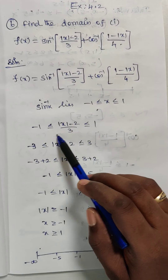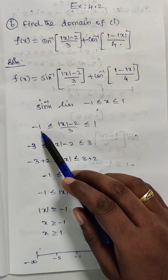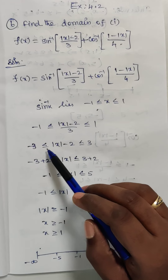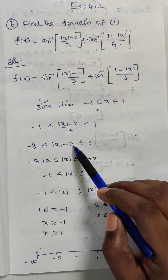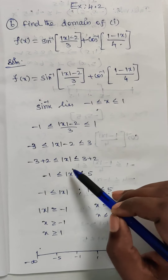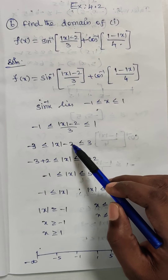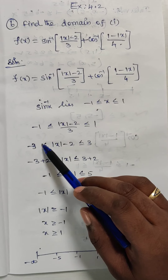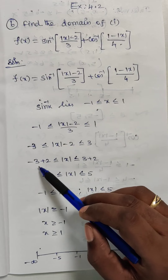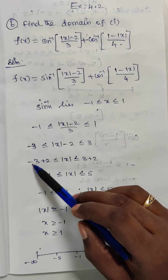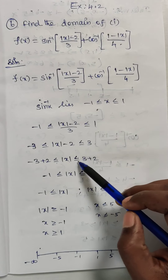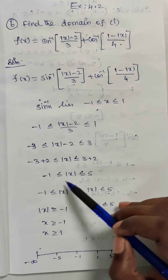I am going to take this 3 in cross multiplication to this side, so minus 3 is less than or equal to mod of x minus 2, which is also less than or equal to 3. Now I am going to take that minus 2 to both sides, so minus 3 plus 2 is less than or equal to mod of x, which is less than or equal to 3 plus 2.